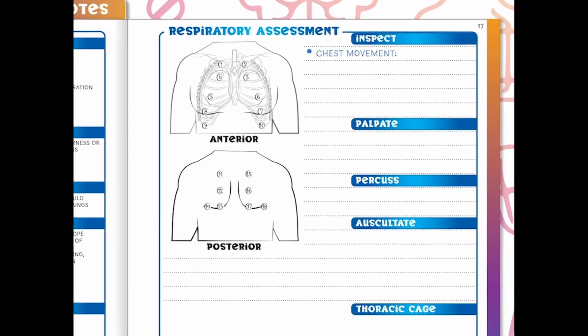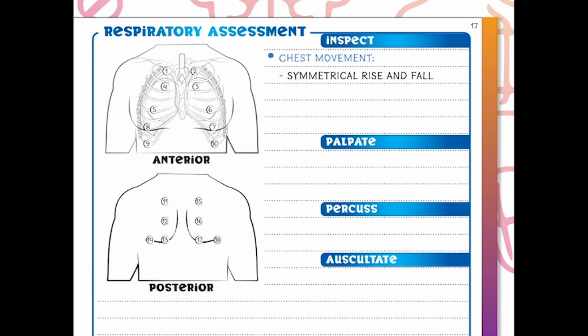We're going to look at chest movement — is the rise and fall while they're breathing symmetrical? Are both sides equally expanding and contracting during their breaths? We're also looking at skin color — is the skin pink, and is capillary refill less than three seconds? If I push on my patient's skin, it turns white, and when I lift up it should flash back to pink in under three seconds. If it takes a long time, the tissue isn't getting good venous blood flow. If we see any dusky blue cyanosis or gray coloring, that is a very late sign that something is going on.